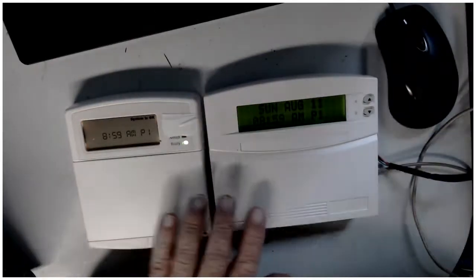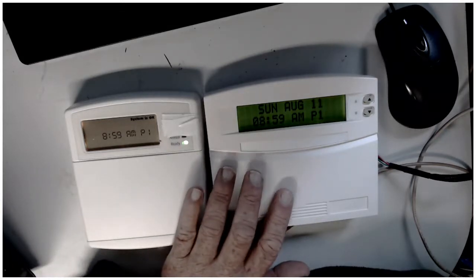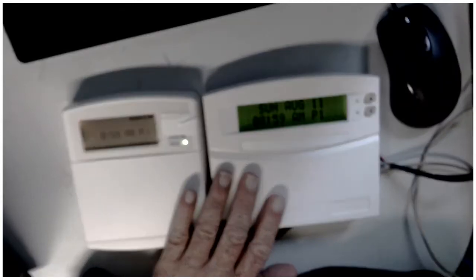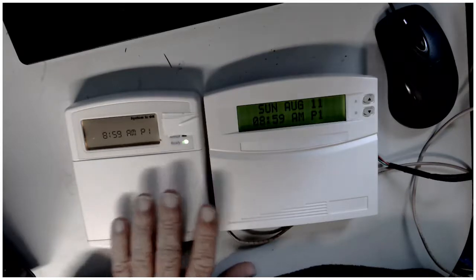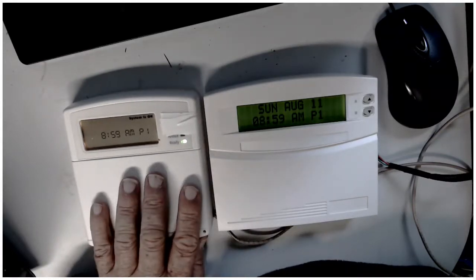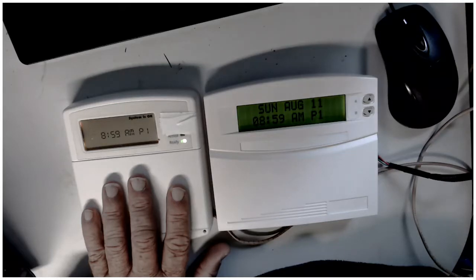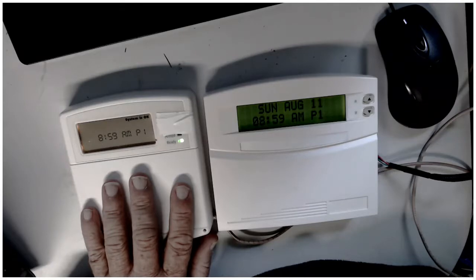Now the only way to unenroll a keypad is you got to have an alphanumeric keypad to do it. To enroll a keypad you don't need the alphanumeric. It'll just auto enroll itself and I'll show you how. So this scenario, let's say that this keypad is in a portion of your home and you want to unenroll it because you're going to do some construction.